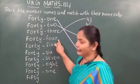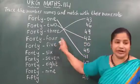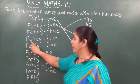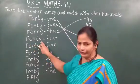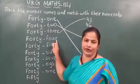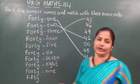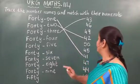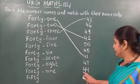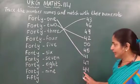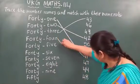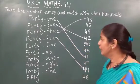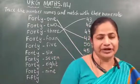Now after 43, which number will come? 44. Now you have to find out the numerals of 44. Where is it written? It is here only. Now you have to find out the numerals of 44.